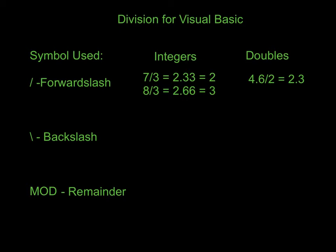Now the backslash sticks to the true definition of an integer by allowing us to round down no matter what. So if we do 7 backslash 3, it equals 2.33 and it still gives us 2. And if we have the number 8 and we divide by 3 using the backslash, this is now going to do what an integer should do and keep that 2, because we're not up to another whole number yet. So when you're dividing integers, use the backslash.